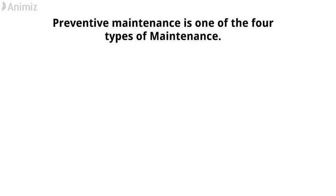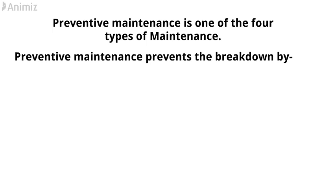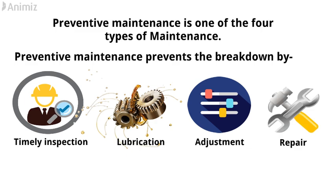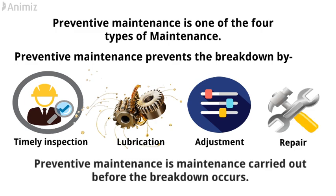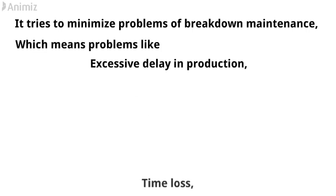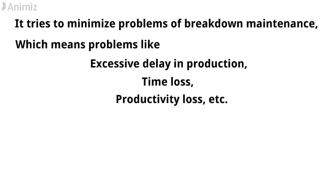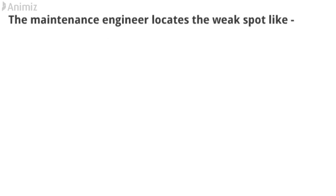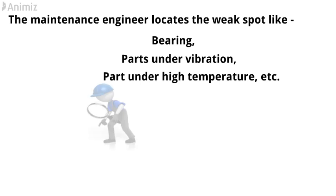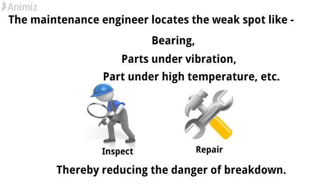Preventive maintenance is one of the four types of maintenance. It prevents breakdown by timely inspection, lubrication, adjustment, and repair. Simply, preventive maintenance is maintenance carried out before a breakdown occurs. It tries to minimize problems of breakdown maintenance such as excessive delay in production, time loss, and productivity loss. The maintenance engineer locates weak spots like bearing parts under vibration or parts under high temperature, then inspects and repairs them, thereby reducing the danger of breakdown.